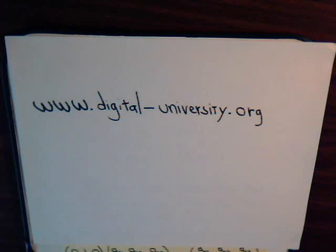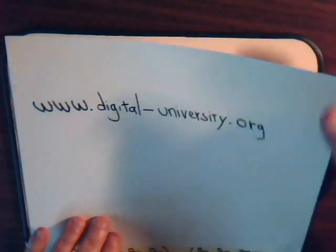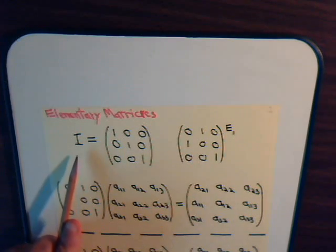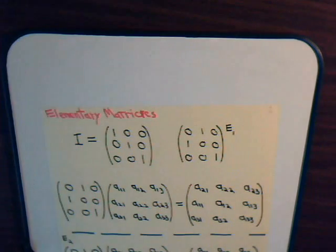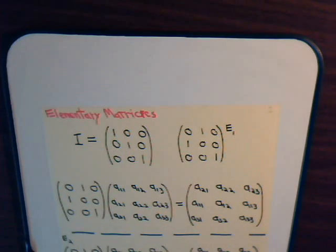This is video number 8 from Digital Dash University in our series on linear algebra. In this video we take a brief look at elementary matrices and determinants. In the last video we talked about matrix multiplication and discussed how an identity matrix exists. For a 3x3 matrix, all elements are 0 except for the diagonal elements, which are equal to 1.